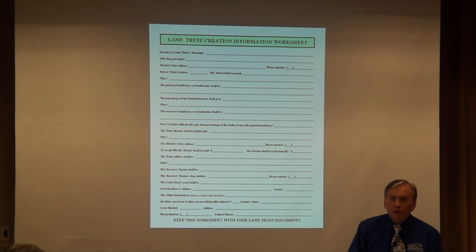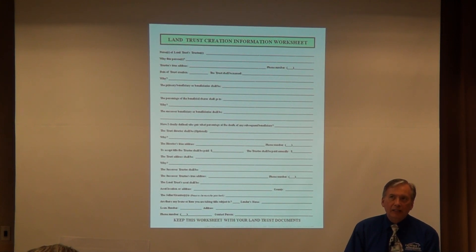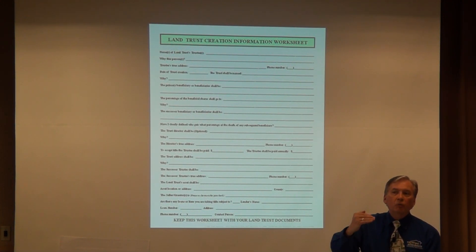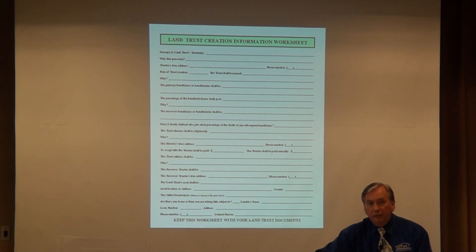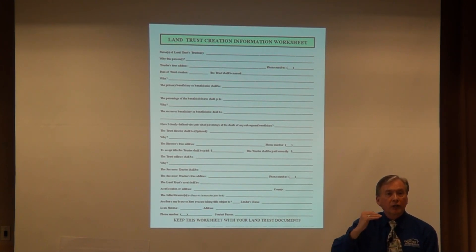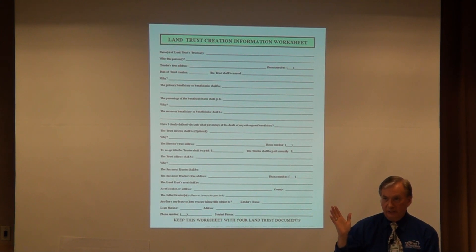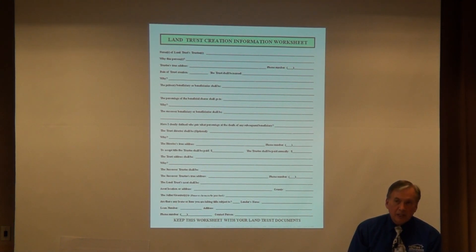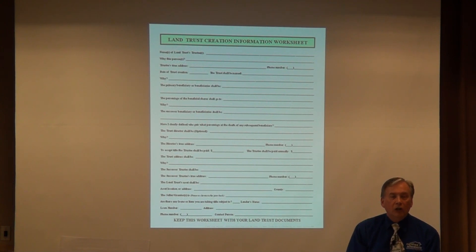The trust director is an optional role. If you have a highly liable property — such as a gasoline station or a daycare center — you may want to have another layer between you, the beneficiary, and the trustee. You can create another layer called a director. You talk to the director, the director talks to the trustee, and the trustee doesn't even know where the directions are coming from. If you're not going to have a director, simply skip that block in the trust. You can always add a director later.